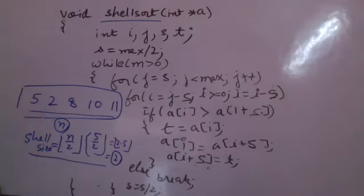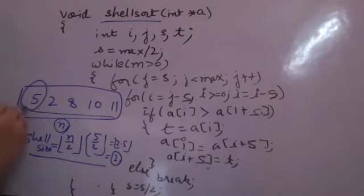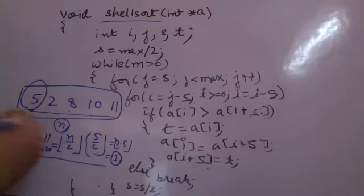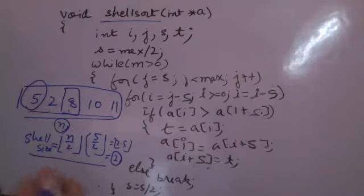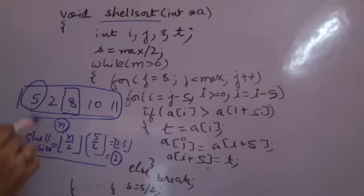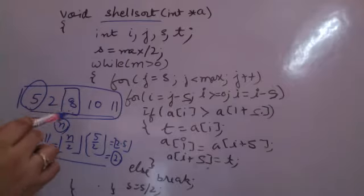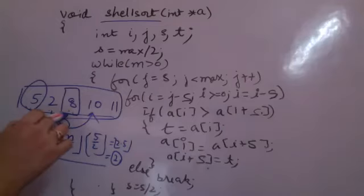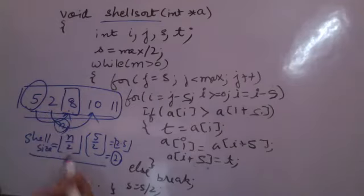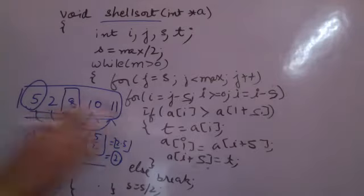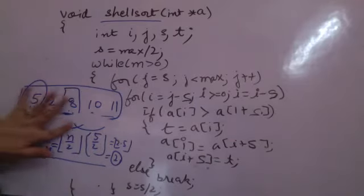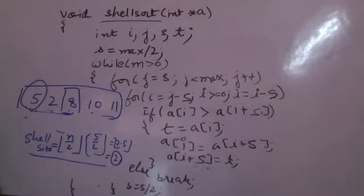I am doing the sorting in ascending order. If the first element is greater than the element with which it is compared, I will swap. So this is 5, my first element. My shell size is 2, so after 2 elements, 8 is there. I compare 5 with 8. Since 5 is not greater, it remains there only. Then I do the same thing within the shell size. I compare 2 with 10. Since again they will remain as is. Now here they all remain in the same position at this shell size and nothing will happen. Next I will again try to find out — same thing is happening here.